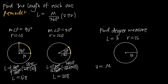We're going to leave M and then divide by 360 degrees and multiply by 2πr, where r is 15. So we plug in 15: 2 times 15 gives us 30, so this becomes 30π.